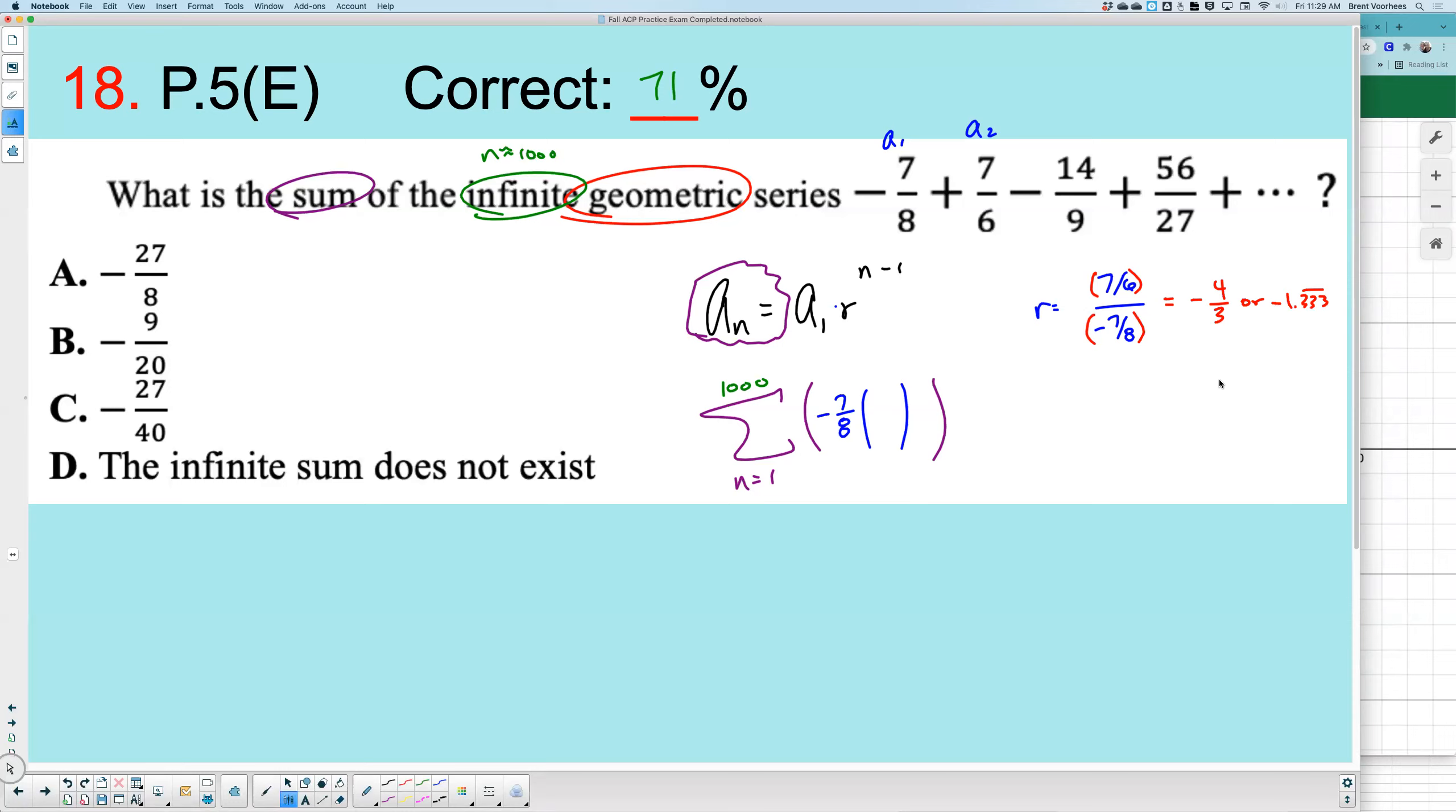Okay, so I'm going to use negative 4 thirds. I'll put that in as my R to the power of N minus 1. And for Desmos, you need to put that in parentheses. So that's what I'm going to type in the calculator.